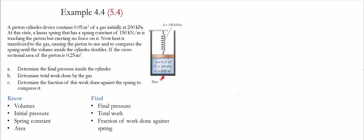In this example, a piston cylinder device contains 0.05 meter cubed of gas initially at 200 kilopascals. A linear spring with a constant of 150 kilonewtons per meter is touching the piston but exerting no force on it. Heat is transferred into the gas causing the piston to rise and compress the spring until the volume doubles. The cross-sectional area of the piston is 0.25 meters squared. We need to determine the final pressure, the total work done by the gas, and the fraction of work done against the spring.